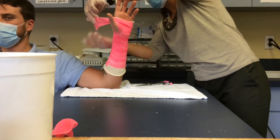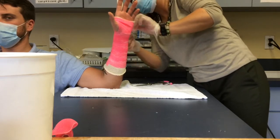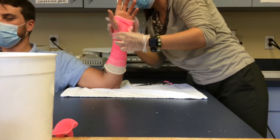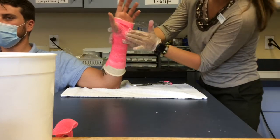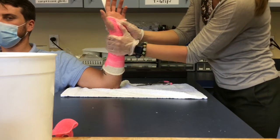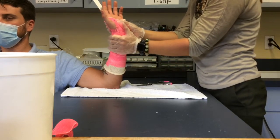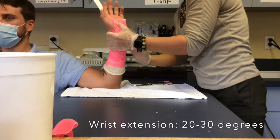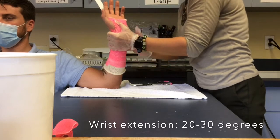Now you will be placing your patient into the proper positioning depending on what orthosis you are making. I will be placing the patient into about 20 to 30 degrees of wrist extension. You will hold them in that position until the material starts to dry.